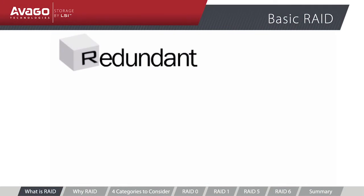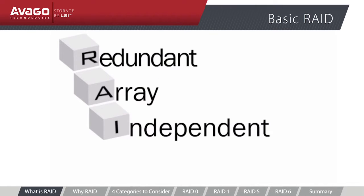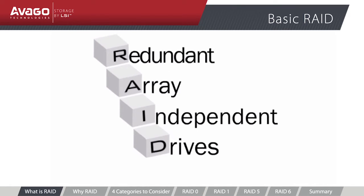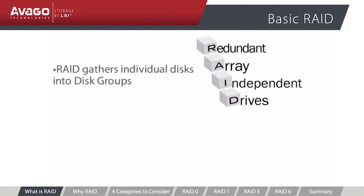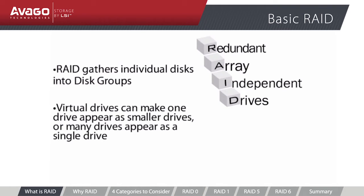RAID stands for Redundant Array of Independent Drives or Discs. RAID gathers individual disk drives into a cohesive drive set, often called disk groups, from which virtual drives can be created. These disks can make one drive appear as many smaller drives, or several drives appear as one single larger drive.